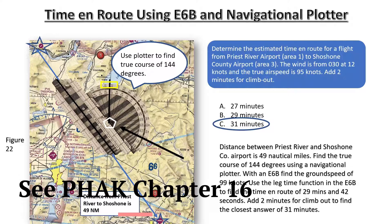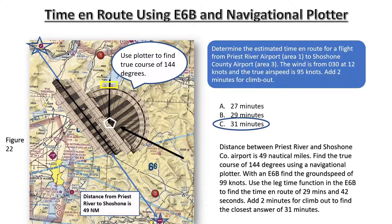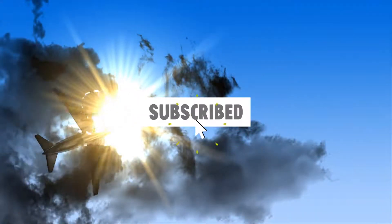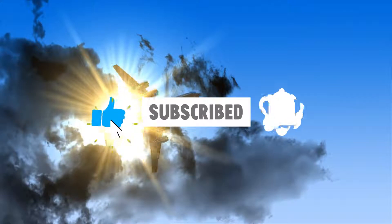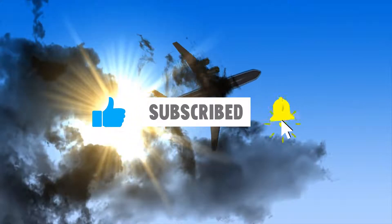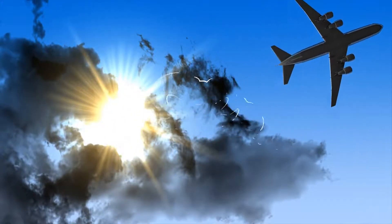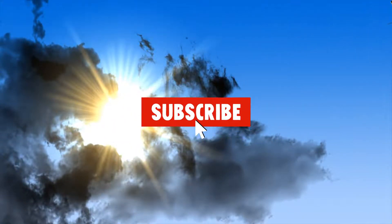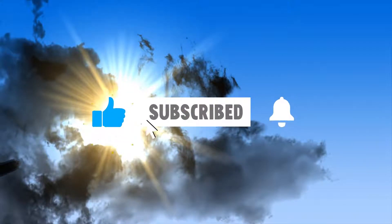More reference material on how to calculate the time en route can be found in Chapter 16 of the Pilot's Handbook of Aeronautical Knowledge. Thank you for watching the video. You should now have a better understanding of how to use an E-6B calculator and navigational plotter to calculate time on route.